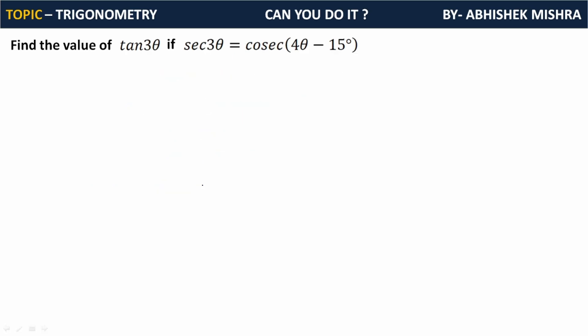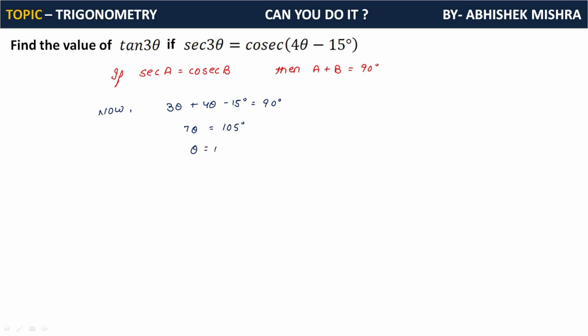Now the next question: find the value of tan 3θ if sec 3θ equals cosec(4θ - 15°). We already derived that if sec A equals cosec B, then A plus B equals 90 degrees. So 3θ plus (4θ - 15°) equals 90 degrees, giving 7θ equals 105 degrees, so θ equals 15 degrees. Therefore tan 3θ equals tan 45 degrees equals 1.